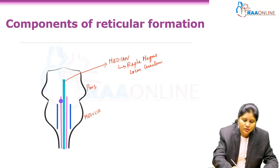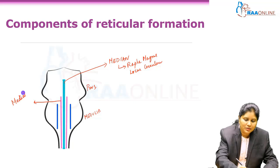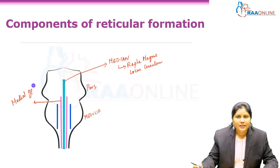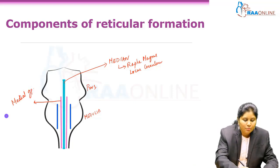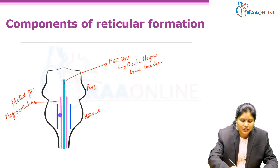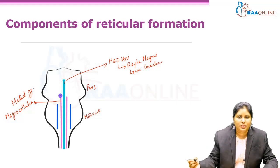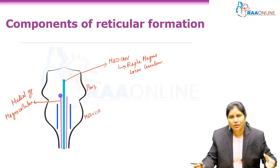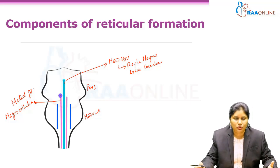Then we have got the medial group. This medial group has got magnocellular neurons — magnocellular neurons of the medulla and magnocellular neurons of the pons. Magnocellular means they have got big-sized neurons.